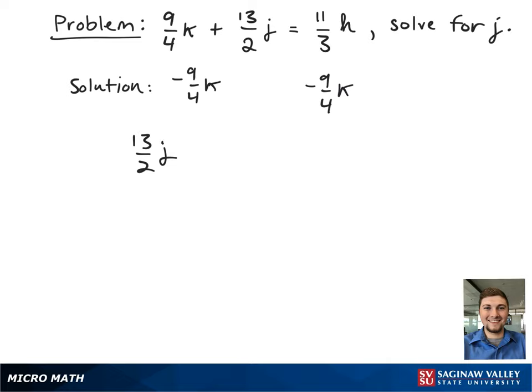This gives 13/2 j = 11/3 h - 9/4 k. Now to finally get our j term by itself, we're going to multiply both sides of the equation by 2/13 so that we can clear the fractions on the left hand side.